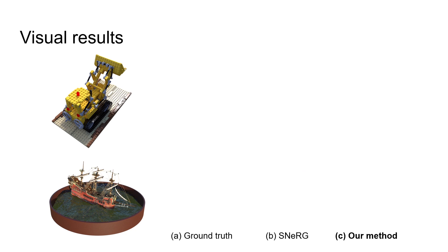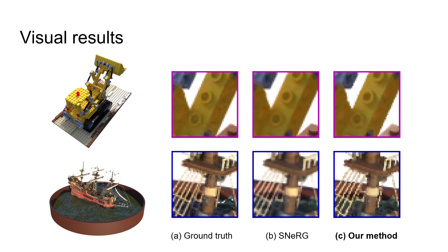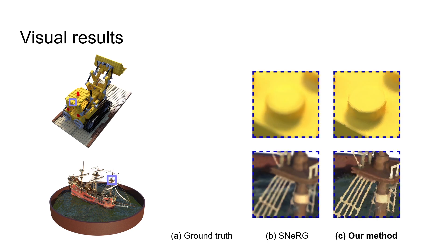Here we show some visual comparisons. When the camera is at an appropriate distance, our method and SNeRG are both close to the ground truth. However, when we move the camera to zoom in onto the objects, SNeRG tends to render over-smoothed images.